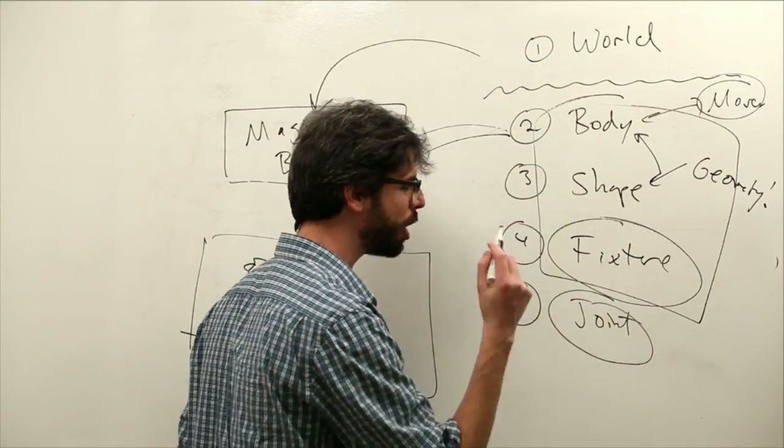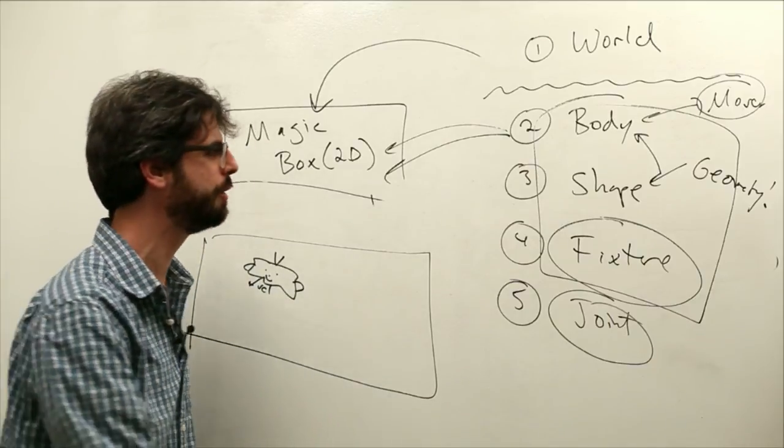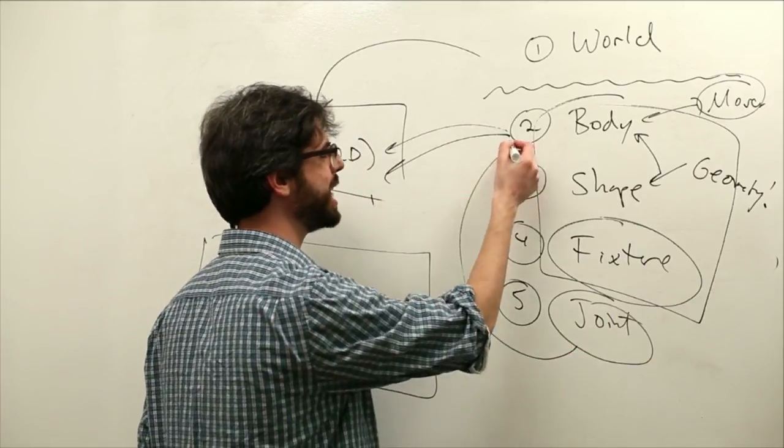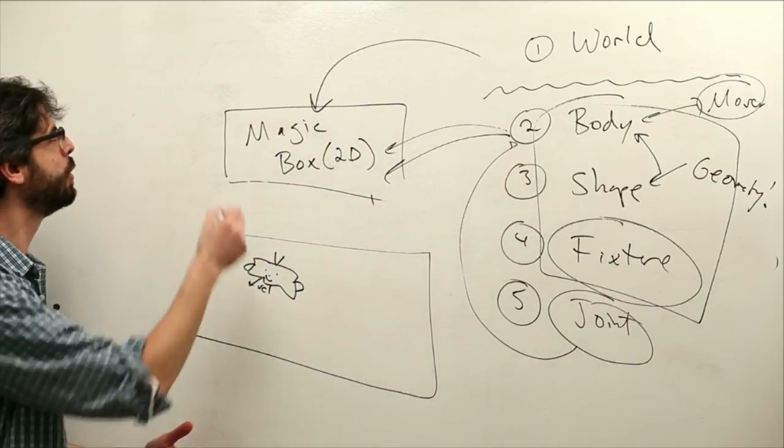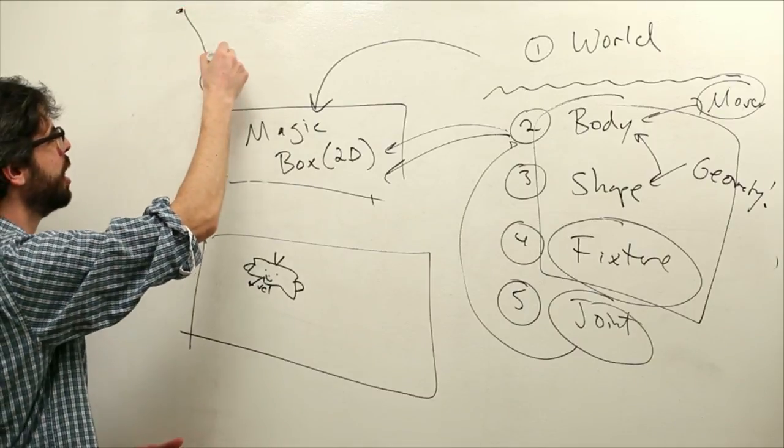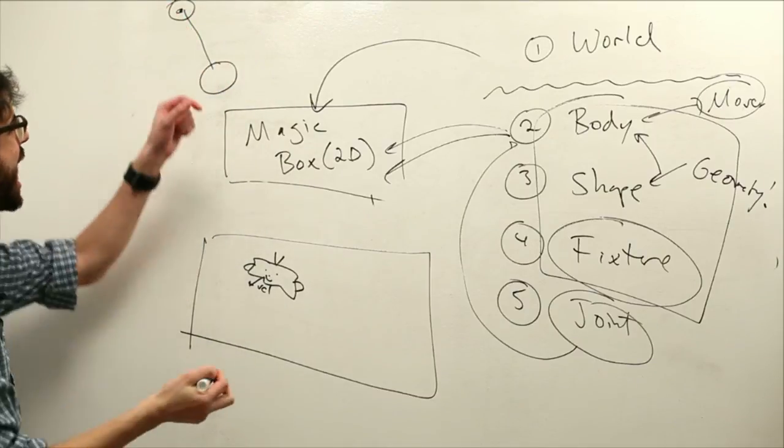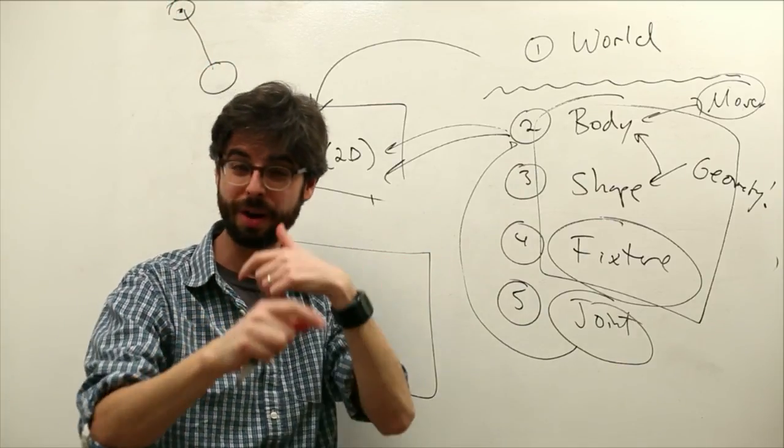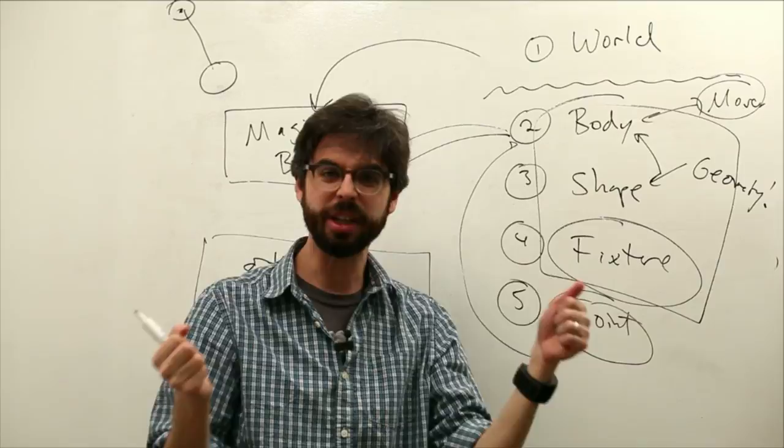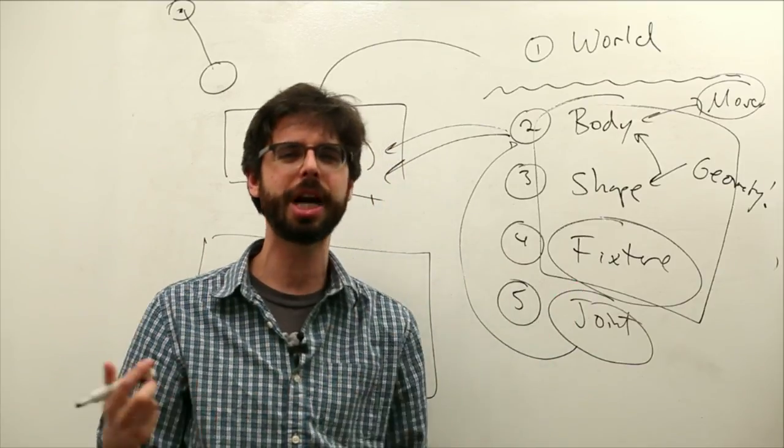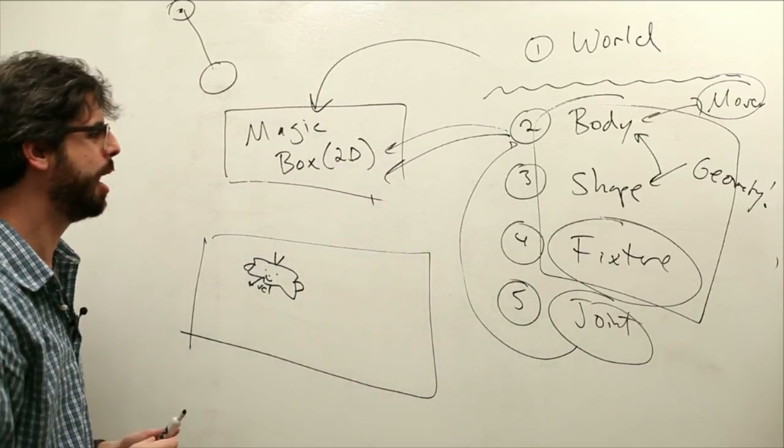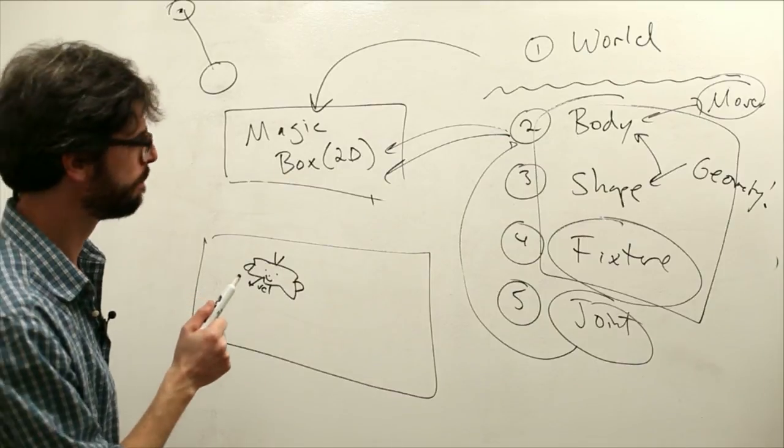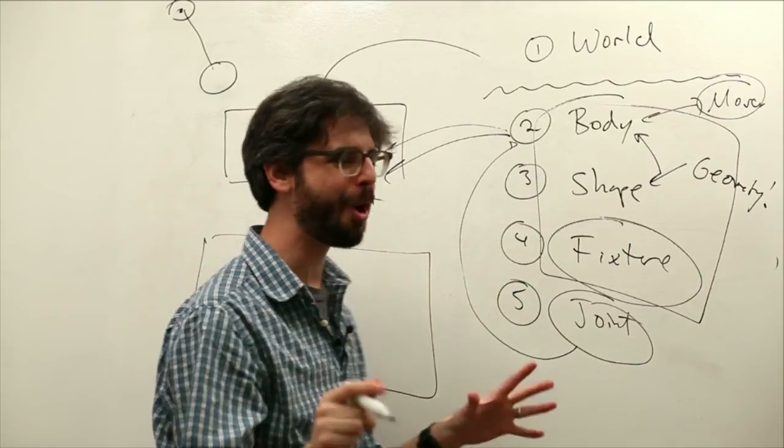Joints, by the way, we're going to start to look at later towards the end of this section of videos. A joint is something that connects two bodies. So when we think about the pendulums we made, or the springs, we might have a body and a body connected with a joint. That could be like a revolution joint. It could be a springy joint. There's a bunch of different kinds of joints we could look at in Box2D. Okay, so this is the overall picture.